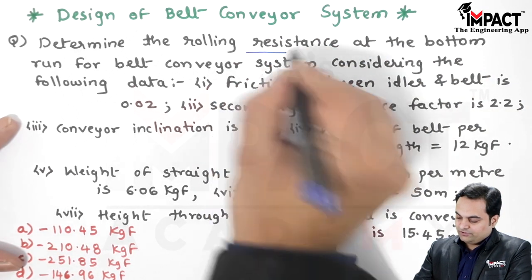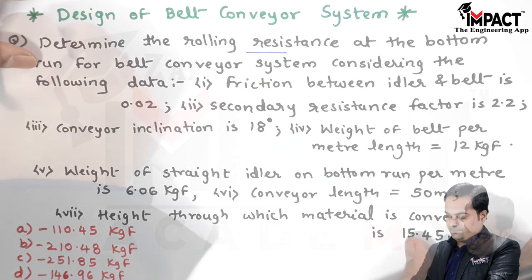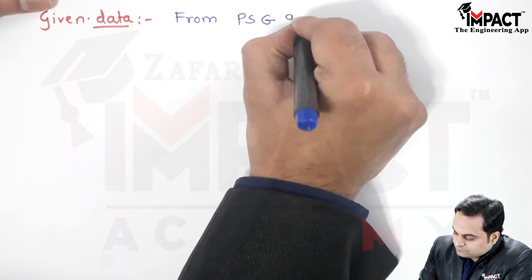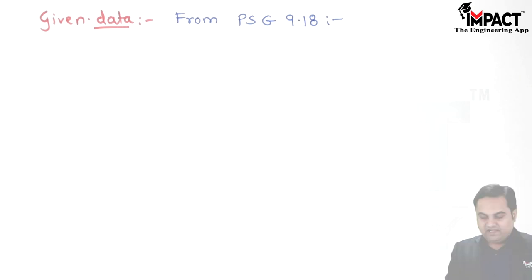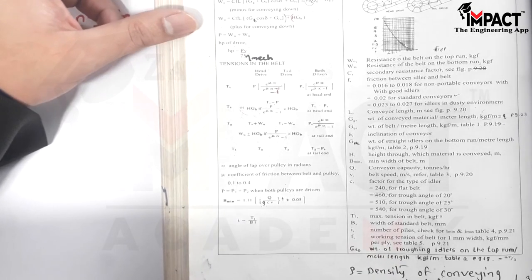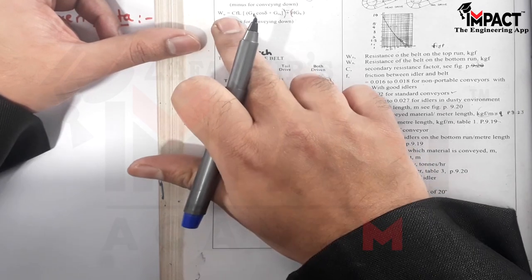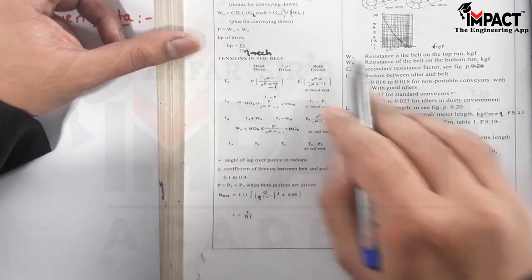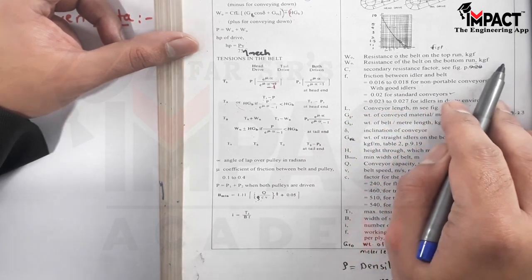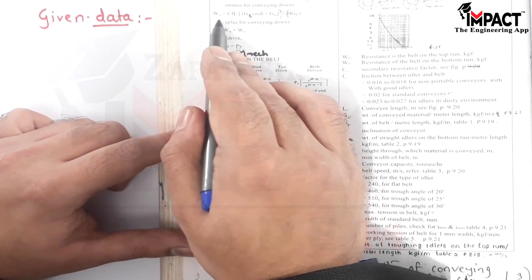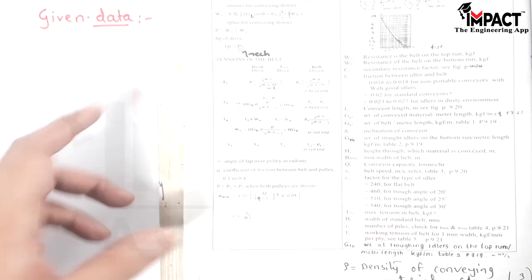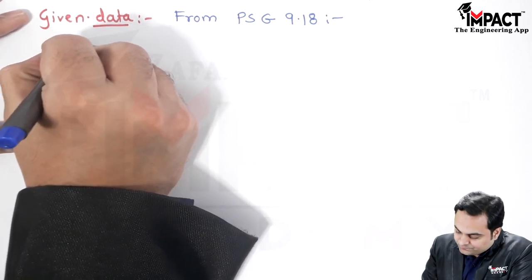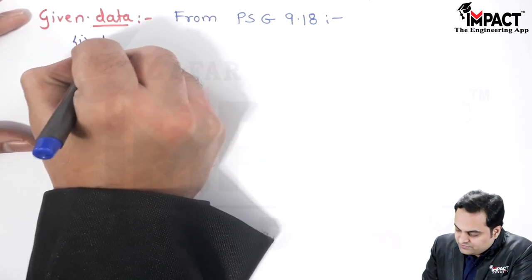So the data they have given now, where to find the rolling resistance at the bottom run. For that, first I'll give the formula. From PSG 9.18 we have the formula. Here we have this formula of W suffix u, and that is the resistance of the belt on the bottom run in terms of kgf, given by this formula. W suffix u is what we have to calculate.